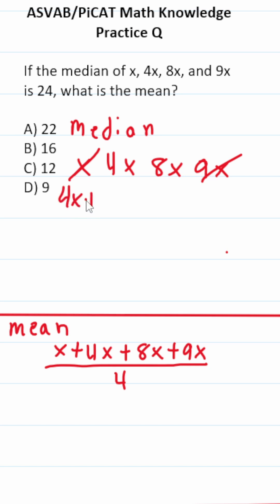In this case, we have two terms in the middle, so we've got to find the average of those. 4x plus 8x divided by 2. We know our median is 24,